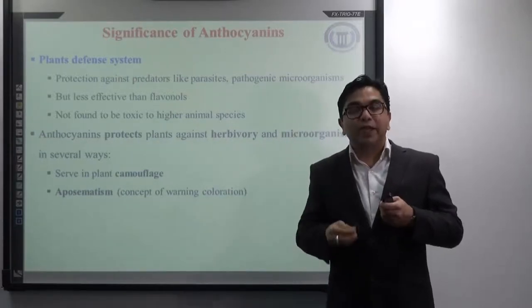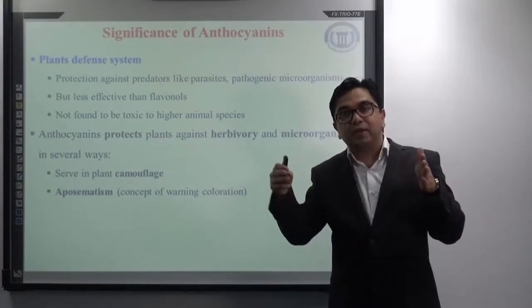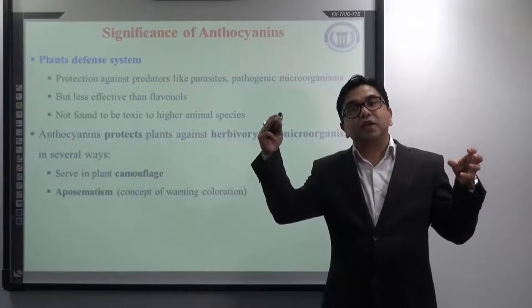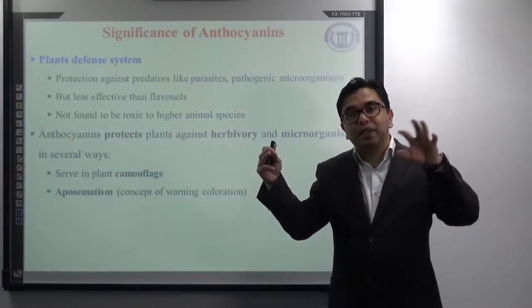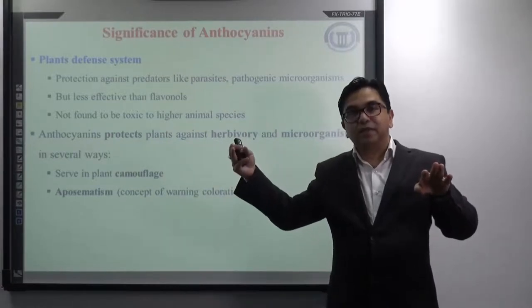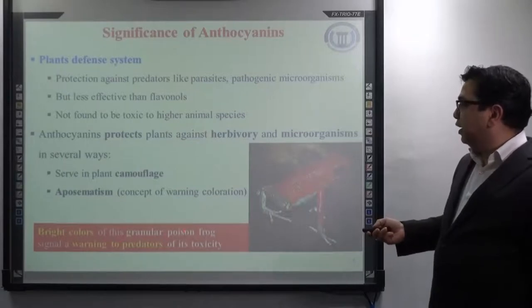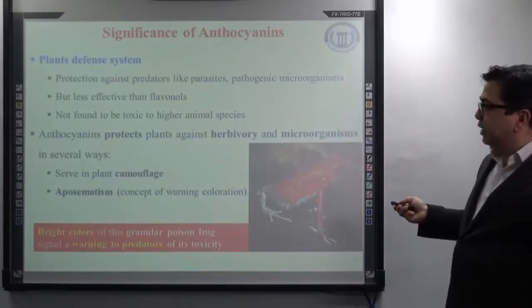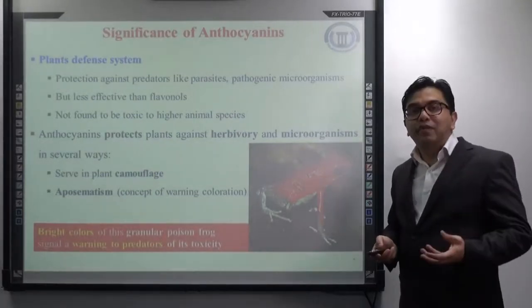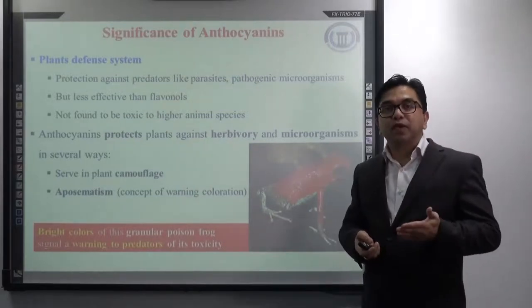Similarly, anthocyanins also provide a certain kind of color to plants which represents a warning color, so predators recognize the plant as a sign of warning. Whereas in camouflage, predators are not able to recognize the plant because it is hidden; in aposematism, they are not hiding the plant but giving a warning signal to predators or insects: don't come near me, otherwise I will be toxic to you. Another example of aposematism is the bright color of the granular poisonous frog, which signals a warning to predators of its own toxicity — the bright color is not for beautification, but is a warning signal.